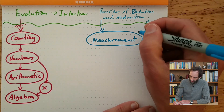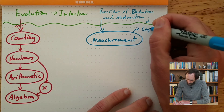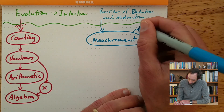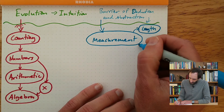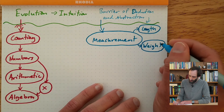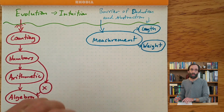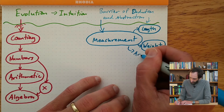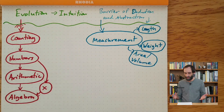An early thing that got measured, as you may remember from the artifacts I showed earlier, is length — the Nippur cubit is an ancient measuring rod. Another thing that can be measured is weight — the Indus Valley civilization is one of the earliest known civilizations to have done this, and the ancient Egyptians also did weight measurements. Other things we can measure include area and volume. We'll talk more about the different types of measurement later.